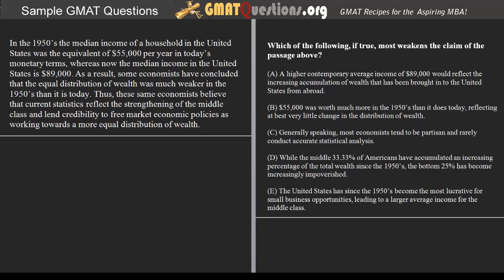In the 1950s, the median income of a household in the United States was the equivalent of $55,000 per year in today's monetary terms, whereas now the median income in the United States is $89,000. As a result, some economists have concluded that the equal distribution of wealth was much weaker in the 1950s than it is today. Thus, these same economists believe that current statistics reflect the strengthening of the middle class and lend credibility to free market economic policies as working towards a more equal distribution of wealth. Which of the following, if true, most weakens the claim of the passage above?